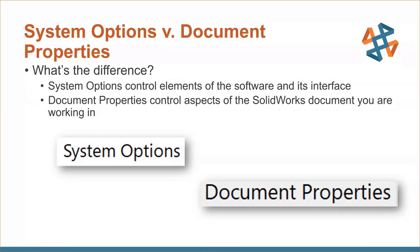With system options, those focus mainly on the elements of the software and its interface — stuff like display settings, feature manager control, and import and export options. Document properties control aspects of the SolidWorks document that you work in, the open document. You can think of stuff like configuration settings, model display settings, and stuff specific to sheet metal and weldments, all contained within that section of the SolidWorks software.